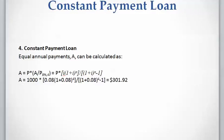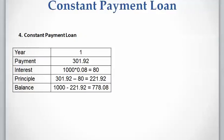The first step is to calculate the equal annual payment A using the capital recovery factor A/P. The equation uses i (interest rate) and n (number of years). With i = 8% and n = 4, multiplying by P = $1,000 gives us approximately $302 per year. So the payments are equal at $302 per year.